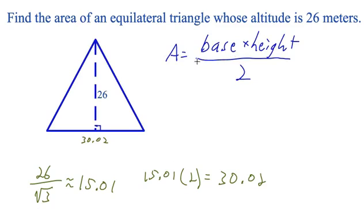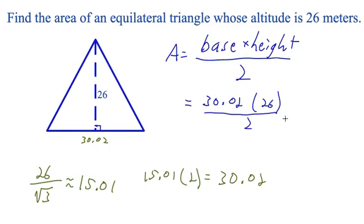So now we know the length of the base of the equilateral triangle is 30.02. Going back to our formula for the area of a triangle, the area of our triangle will be 30.02 multiplied by 26 divided by 2. When we work that out on our calculator, we get about 390.26. So the area of an equilateral triangle whose altitude is 26 meters is about 390.26 square meters.